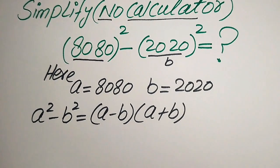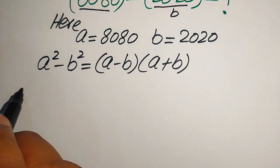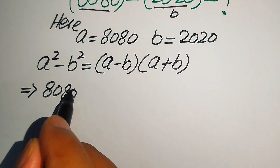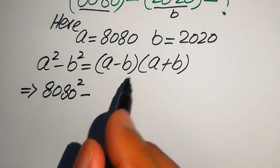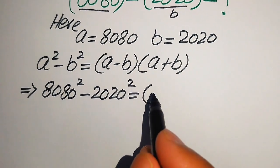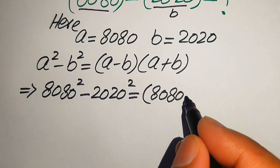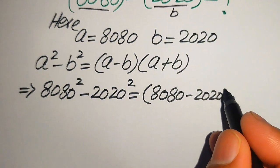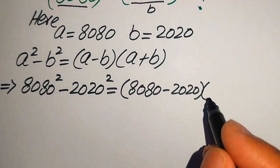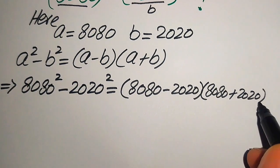So this is our nice algebraic formula. We put the values of a and b into this formula. It is written as: 8080 whole square minus 2020 whole square equals, for the first factor, 8080 minus 2020, and for the second factor, 8080 plus 2020.